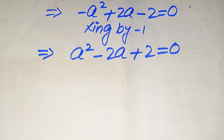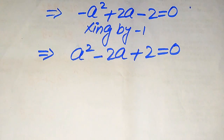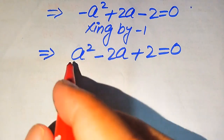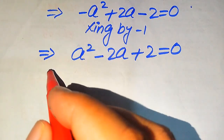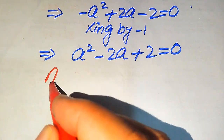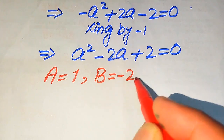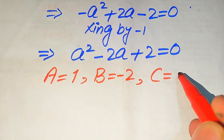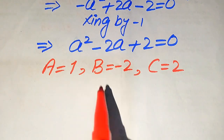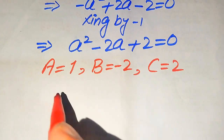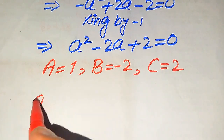This is a quadratic equation in the variable a, so we solve it using the quadratic formula. First we identify the coefficients: capital A equals 1, capital B equals minus 2, and capital C equals plus 2.